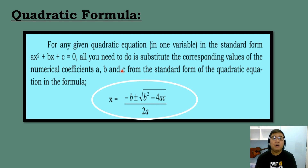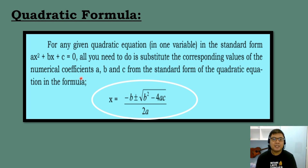You can solve all quadratic equations using the quadratic formula. For any given quadratic equation in one variable in the standard form AX squared plus BX plus C equals 0, substitute the corresponding values of the quadratic term, the linear term, and the constant term into the formula: X equals negative B plus or minus the square root of B squared minus 4AC, all over 2A.